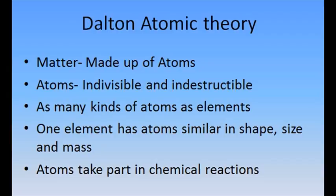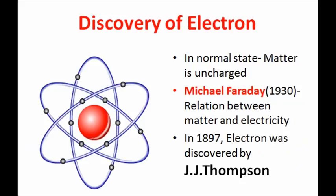However, according to modern atomic theory, atoms are made up of still smaller fundamental particles known as elementary particles. Let's now discuss electrons. Matter is usually uncharged in normal state. However, electric charges and currents can be produced by rubbing and using magnets.